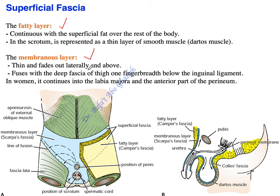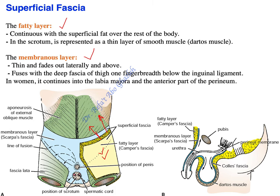Looking here, this is the fatty layer of superficial fascia. This layer is continuous over almost all of your body, up and down above your thigh and so forth.